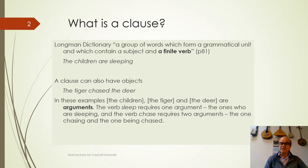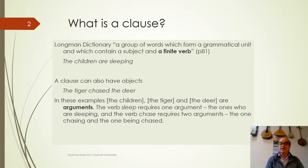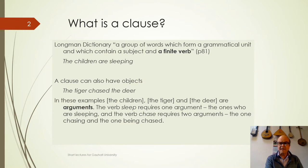In these examples, the children, the tiger and the deer are called arguments. The verb 'sleep' requires only one argument, the one doing the sleeping. You can say 'the children are sleeping on the bed,' 'the children are sleeping at night,' but 'on the bed' and 'at night' are not arguments — they are not required by the verb. The verb 'chase,' on the other hand, requires two arguments: the one chasing and the one being chased. When you have only one required argument, it's called intransitive. When you have two, it's called transitive.